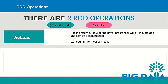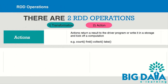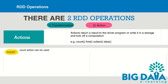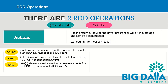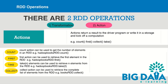Actions are the second type of operations in RDD. Actions return a result to the driver program or write it to storage and kick off a computation. Some examples are count, first, collect, and take. Count action can be used to get the number of elements in an RDD. First action can be used to retrieve the first element in the RDD. Take N action can be used to retrieve N elements out of the RDD. Collect action can be used to retrieve the complete list of elements from the RDD.